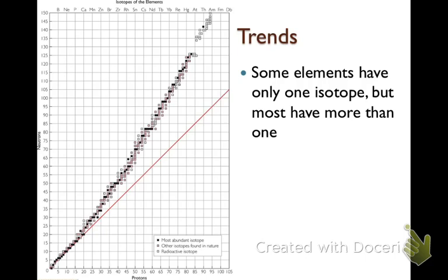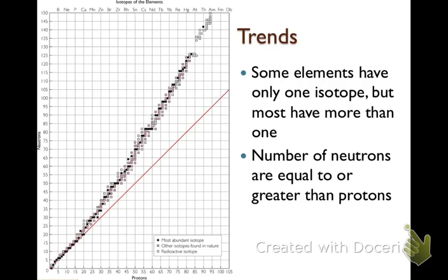So here are some basic trends. Some elements have only one isotope, but many of them have more than one isotope. The number of neutrons are equal to or greater than the number of protons. And all elements above 83 are unstable.